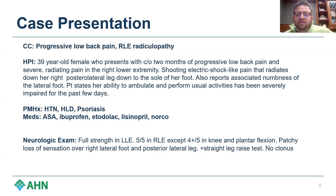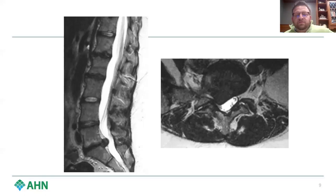This is the MRI obtained for this patient. You can see here on the sagittal T2 view: disc degeneration at L5-S1 with a bulging disc at L5-S1. On the axial T2 view of that same level, there is a right-sided paracentral or paramedian disc herniation.